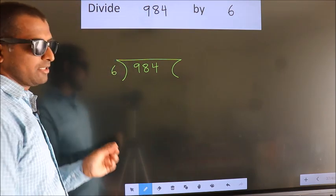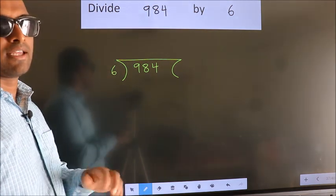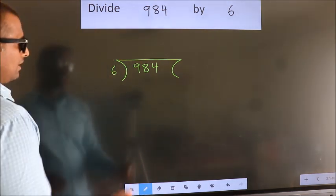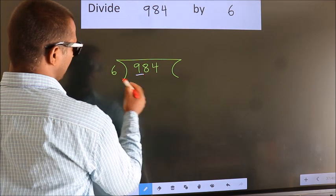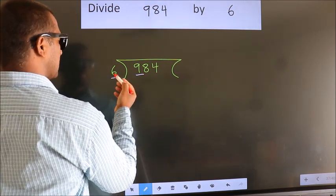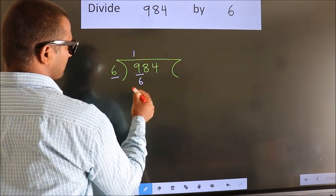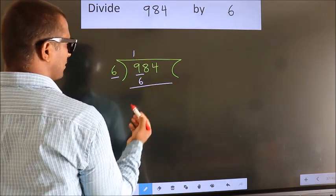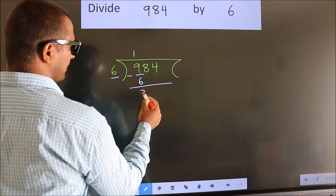This is your step 1. Next. Here we have 9. Here 6. A number close to 9 in 6 table is 6 times 1, 6. Now we should subtract. We get 3.